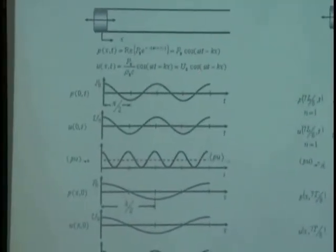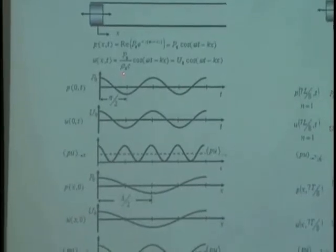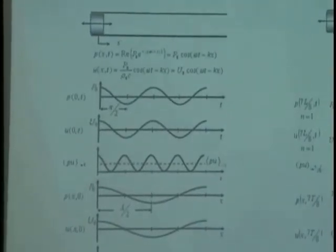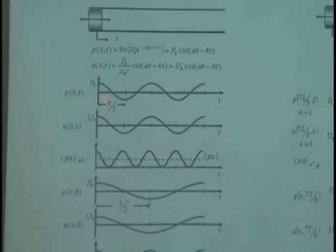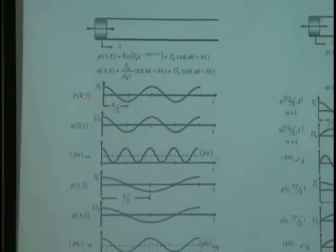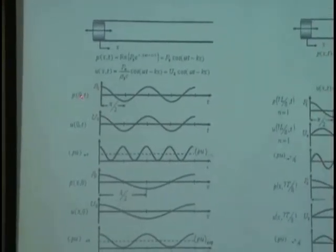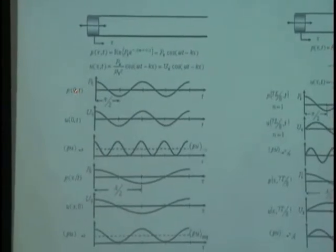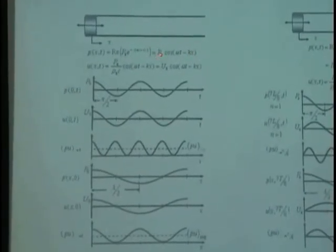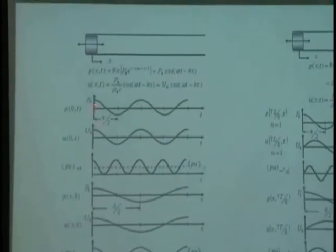Therefore, driving point impedance is rho zero C, same as the characteristic impedance. This is the pressure I observed at X equal zero. At X equal zero, it has to be P0 cosine omega T.